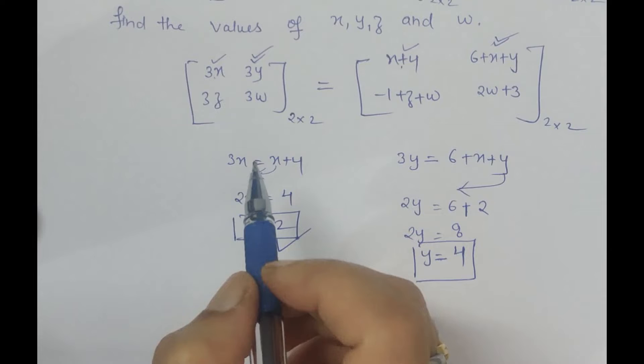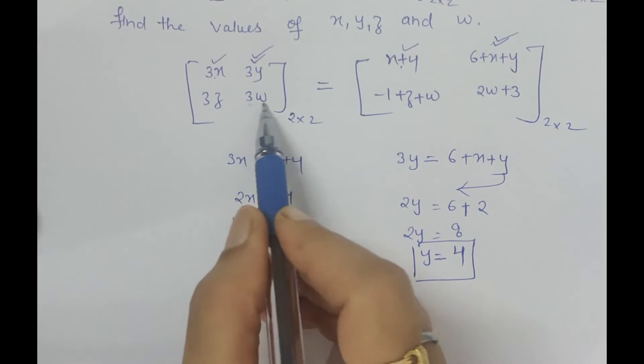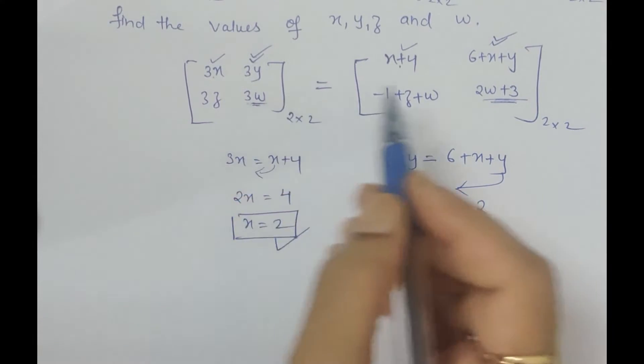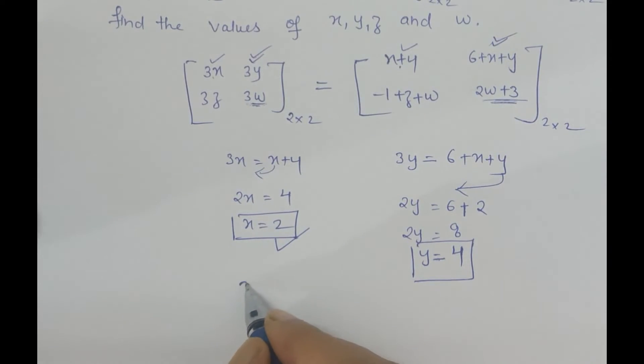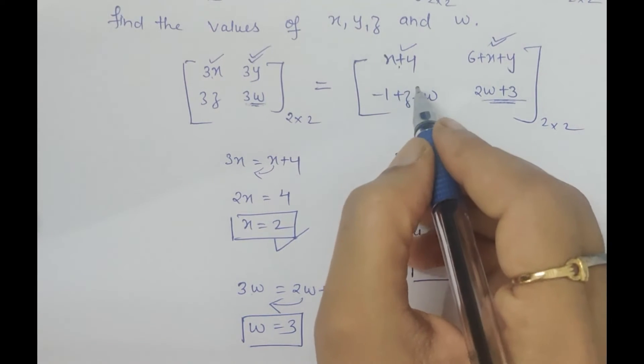Now let's find w. We have these two elements with w, so let's equate them: 3w equals 2w plus 3. When I shift this to the other side, I get 3w minus 2w is w, which equals 3. I got the value of w as well.